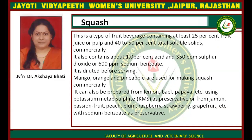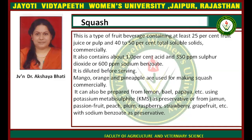Basically, what is squash? Squash is a beverage. It has 25% fruit juice or pulp, 40-50% total soluble solids. Commercially, it contains 1% acid and 350 ppm Sulphur Dioxide or 600 ppm Sodium Benzoate. Sulphur Dioxide and Sodium Benzoate work as preservatives. It is diluted before serving.